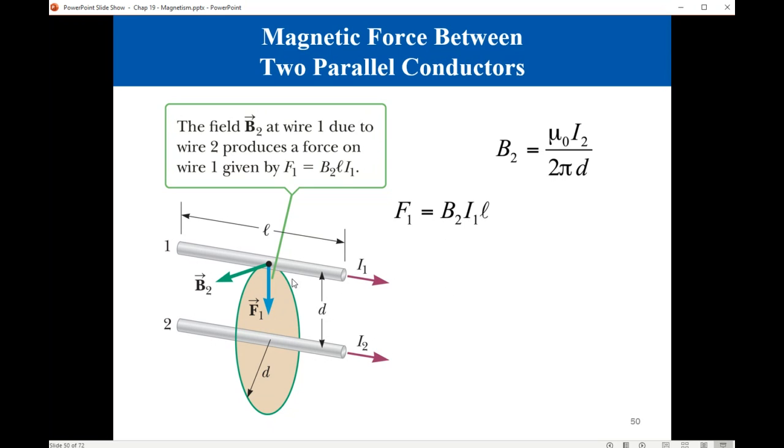The force acting on wire 1 due to wire 2 is equal to B2·I1·L, and B2 is μ₀I2 divided by 2πD, where D is the distance. Substituting for B2 and multiplying by I1 and L, you end up with this result: μ₀I1I2L divided by 2πD, which is a force of attraction between the two wires.